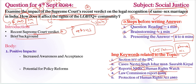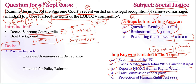A brief background is very important here. For example, we can include LGBTQ+ rights or community-related issues, or include Section 377 of the IPC. Coming to the body part, we need to address our keywords one by one. Positive impacts is the first important keyword.